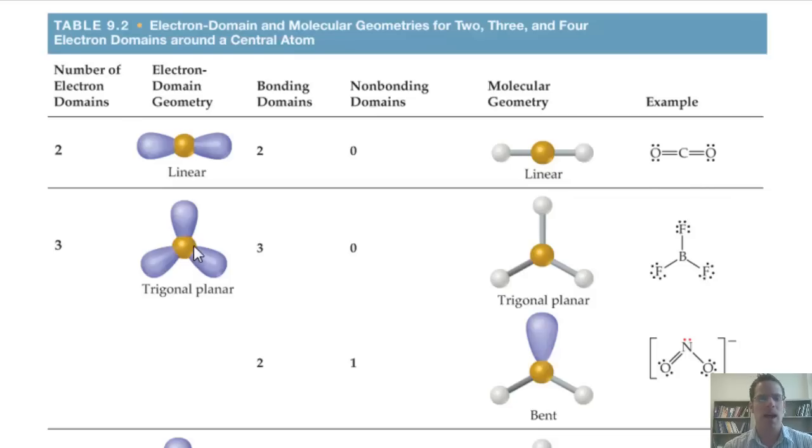Let's compare that to an example where I have a central atom bonded to three separate things. If all of those three separate things are things that are actually sharing electrons, that is, other atoms or groups that are bonded to the central atom, then I would say the number of bonding domains is three. The number of non-bonding domains or lone pair electrons is zero. And the molecular geometry is trigonal planar. An example of this is boron trifluoride.